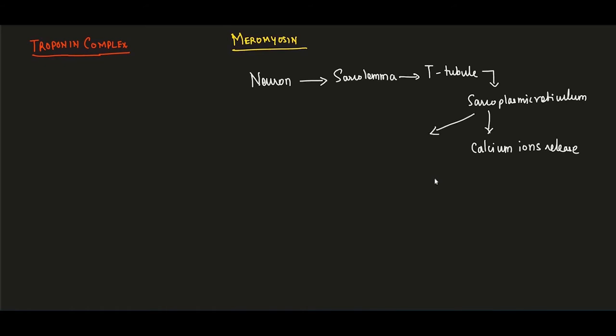Simultaneously, at the myosin head, ATP binds to the ATP binding site and ATP breakdown occurs, providing energy. These two events — calcium ion release and ATP hydrolysis — together drive the muscle contraction process.